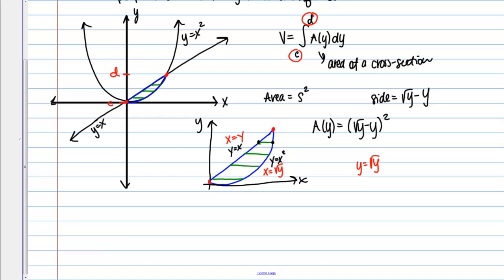I could square both sides here and get y squared equals y or y squared minus y equals 0, which I can write as y times y minus 1 equals 0. So we get y equals 0 and y equals 1.